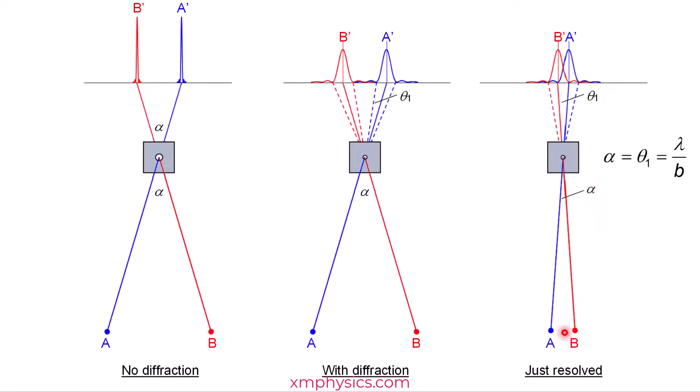But what you can control is the slit width. The bigger the slit width, the smaller the spread, and the more resolvable the two images will be.